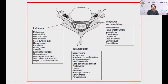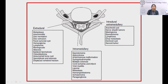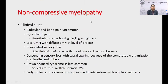Extradural: most common is metastasis, arachnoiditis, and disc herniation. Intramedullary: primary spinal cord tumors such as ependymoma and astrocytoma. Intradural extramedullary: most common are nerve sheath tumors, meningioma, schwannoma, and arachnoid cysts.